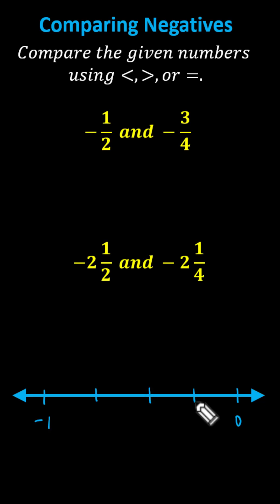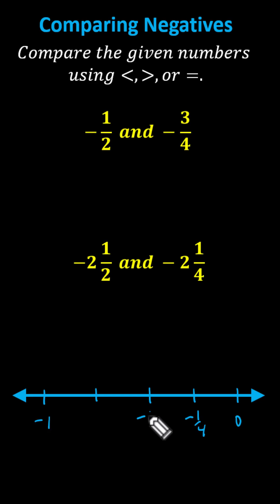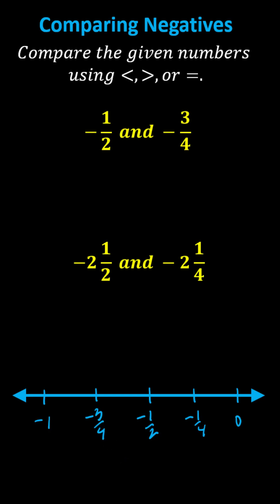Starting at zero and moving left, we have negative one-fourth, negative two-fourths — which is equal to negative one-half — negative three-fourths, and then finally negative one. Now let's plot the two values: we have negative one-half and we have negative three-fourths.